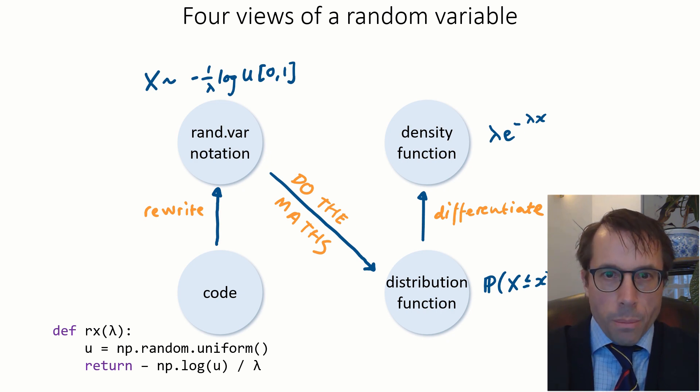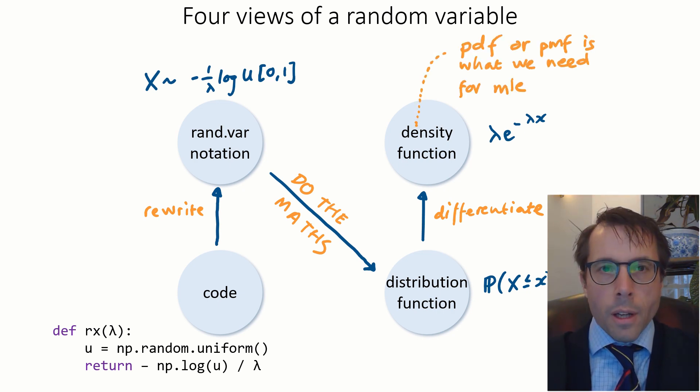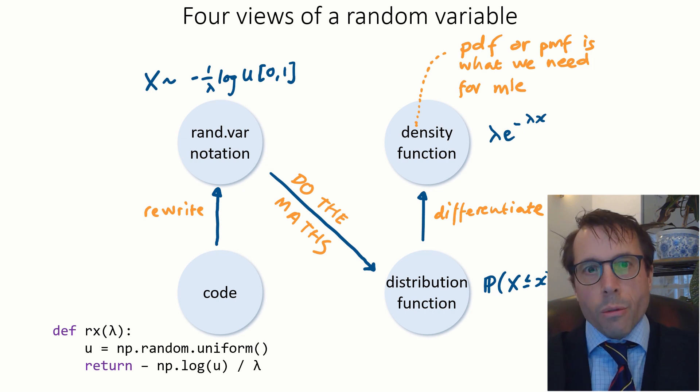If you're running simulations, the code view is obviously what you want. But for maximum likelihood estimation, the density function, the probability density function, is the view that's most important to us. Or if it's discrete random variables, the probability mass function. So that's what we're going to work on in this video.